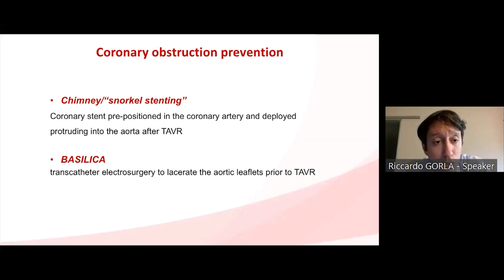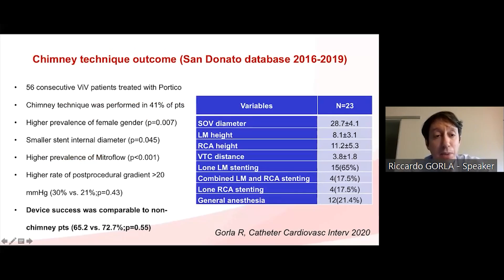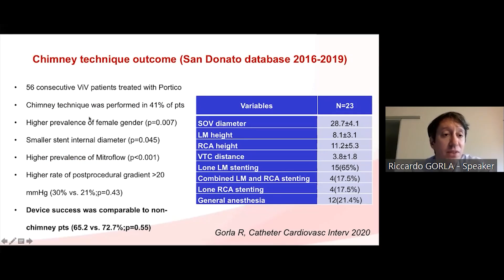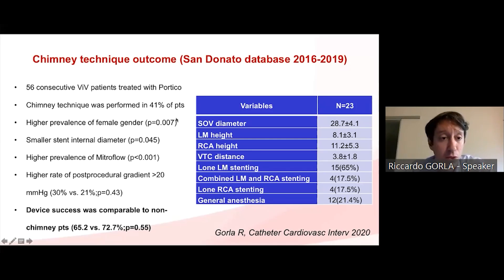In the presence of high risk of coronary obstruction, there are two techniques available. The first is the chimney technique, which involves placing stents in both the right coronary artery and left main, deploying them after TAVR. At our center, among 56 patients treated with Portico valve-in-valve TAVR, chimney technique was required in a large proportion — 41 percent.